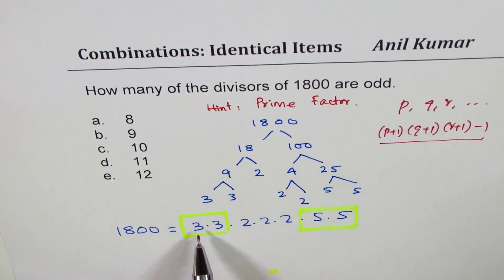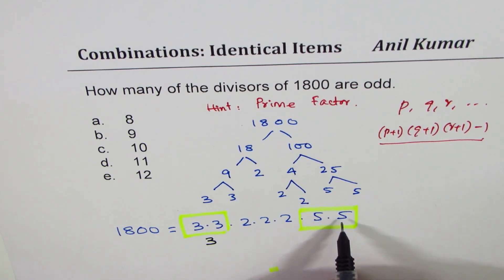So here the number of choices I have are 3. Then with 5's also I have 3 choices - I may not select any 5, or I may select one 5 or two 5's.